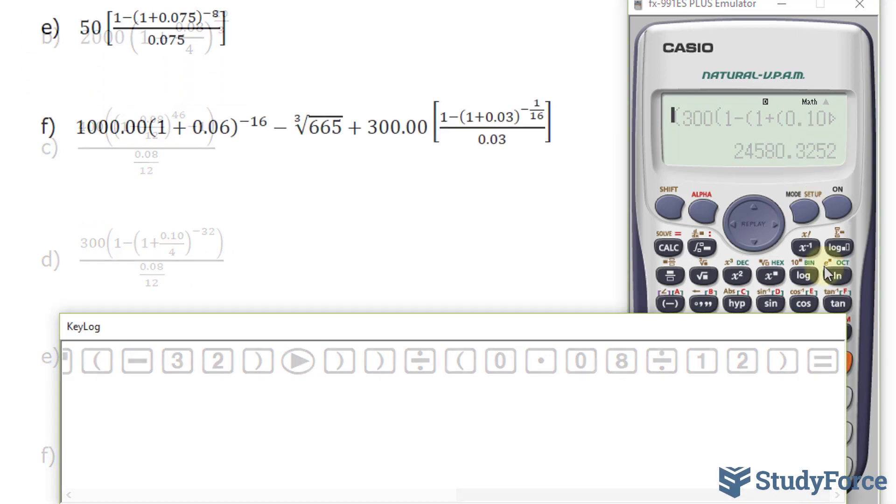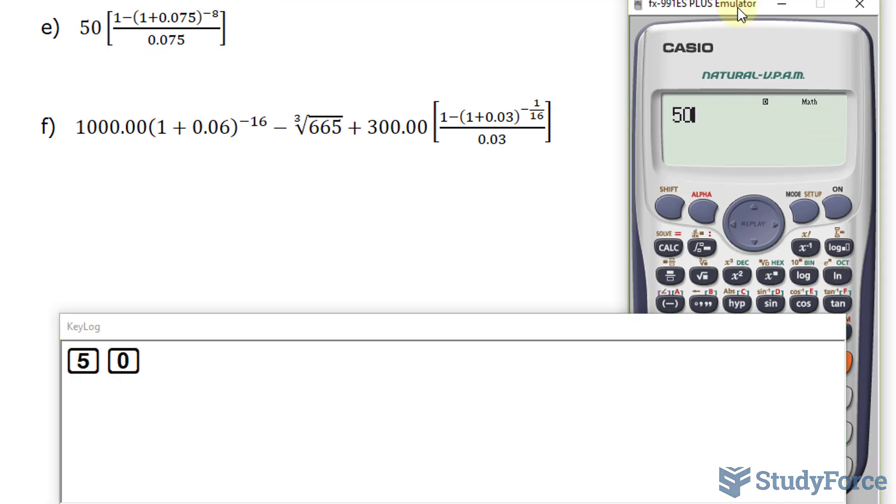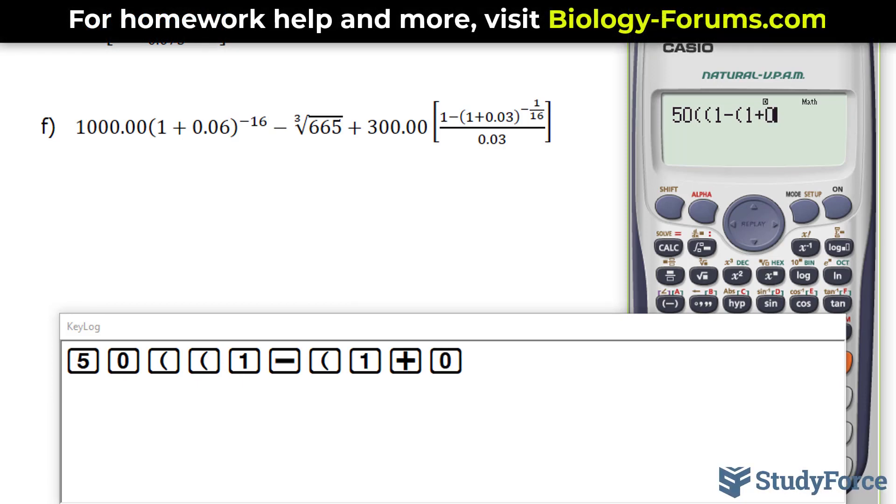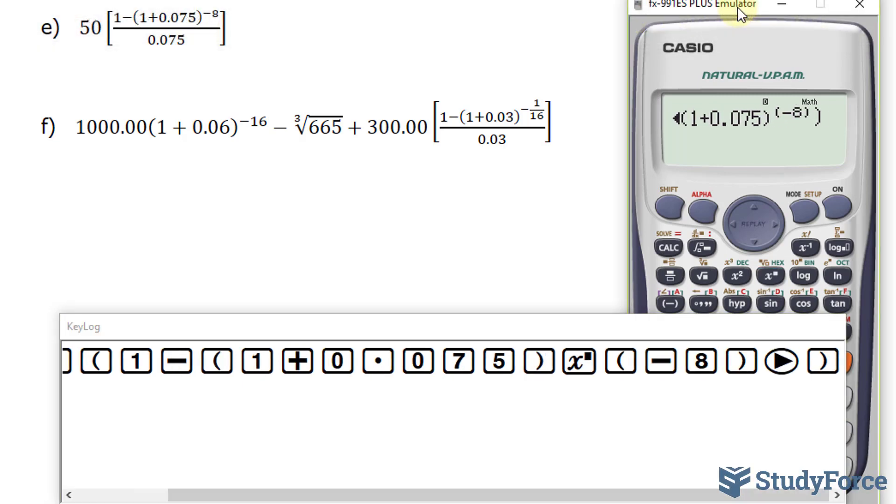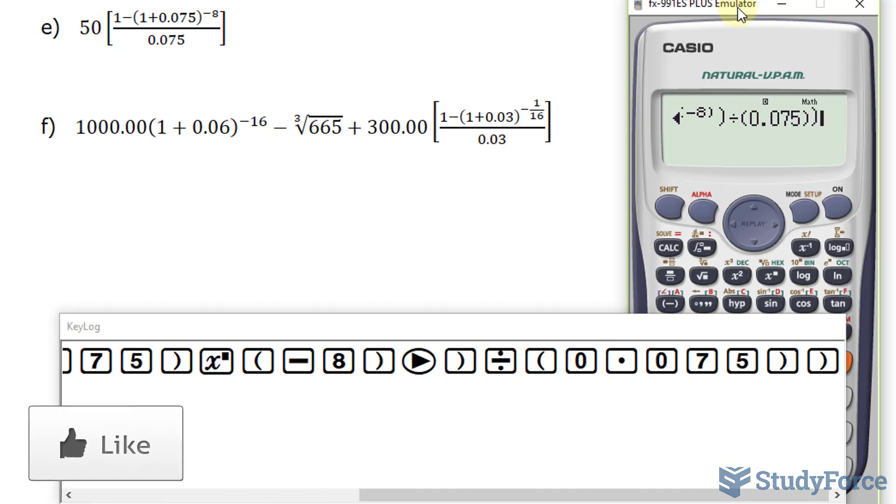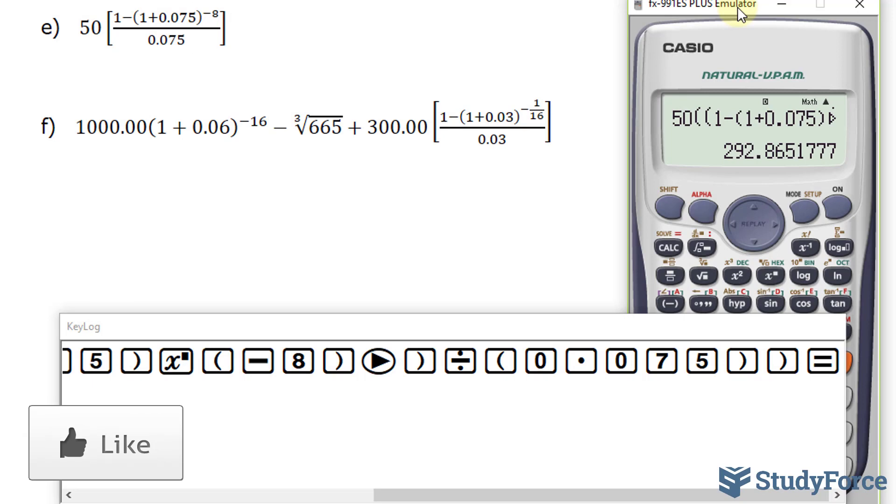Let's move on to question E and F. We have a smaller expression this time: 50. And here we have the square brackets, which are the same thing; you just put round brackets. And then within these square brackets is a fraction. So the numerator gets its own: 1 minus bracket, 1 plus 0.075 raised to the power of negative 8, close the top. And now the bottom. Notice that 0.075 is just a number, so technically you don't need to put brackets around this denominator. But if it becomes more complex, you do need it. So just to be consistent, I will add it. Close the denominator, and then close the square bracket. We end up with 292.87 rounded to two decimal places. It should be 87.